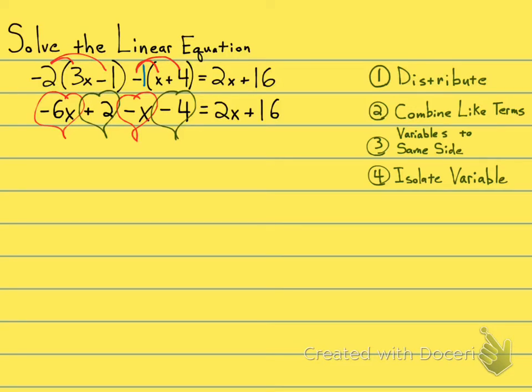Any like terms on the right-hand side? No, the 2x doesn't go together with the 16. So let's go ahead and let's combine them. Negative 6x minus x is going to give me a negative 7x. And plus 2 minus 4 will give me a minus 2.